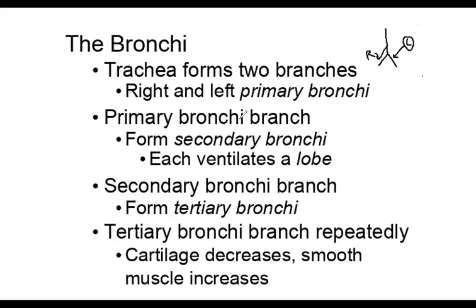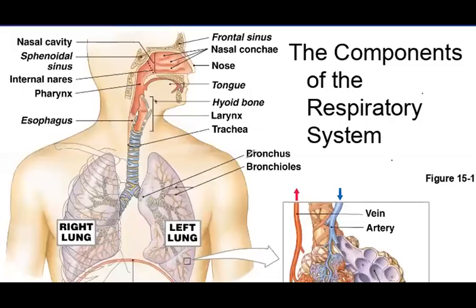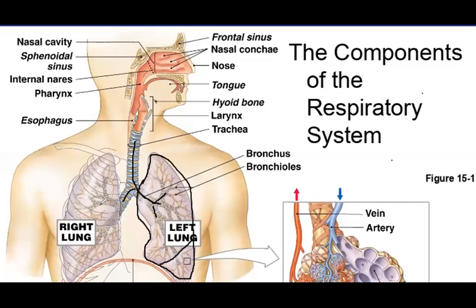Then the bronchi branch into secondary bronchi, which are going to ventilate a lobe — they go into a lobe. Here's my trachea, here's my primary bronchi, and once I get in here it's going to split into secondary bronchi. The lung is divided into lobes, and the secondary bronchi come in and start to split up, going into the different lobes of the lung.